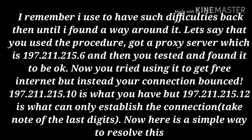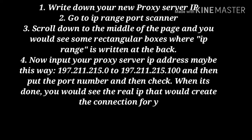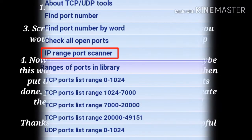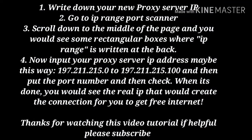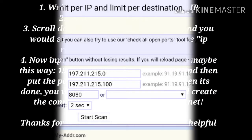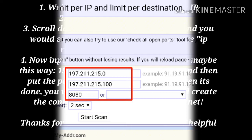197.211.215.10 is what you have, but 197.211.215.12 is what can only establish the connection — take note of the last digits. Here is a simple way to resolve this: 1. Write down your new proxy server IP. 2. Go to IP range port scanner. 3. Scroll down to the middle of the page and you would see some rectangular boxes where IP range is written. 4. Input your proxy server IP address range, for example 197.211.215.0 to 197.211.215.10, then put the port number and check. When done, you would see the real IP that would create the connection for you to get free internet.